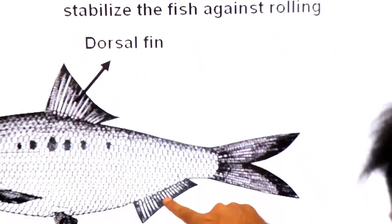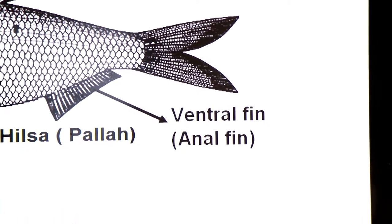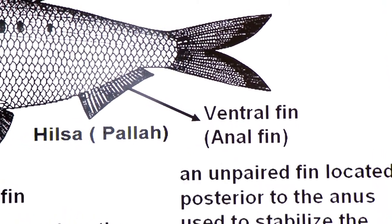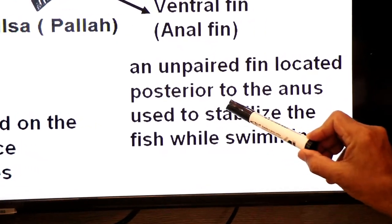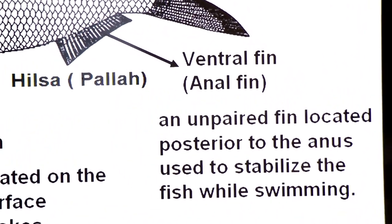And dear students, this one is ventral fin, also known as anal fin. An unpaired fin located posterior to the anus, used to stabilize the fish while swimming.